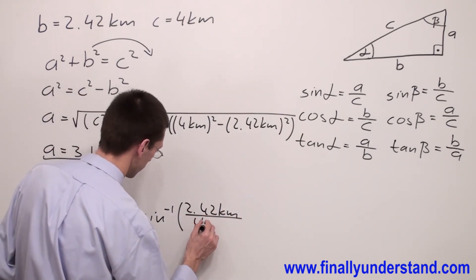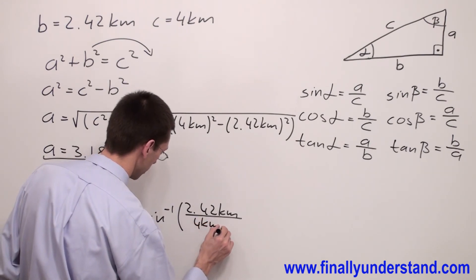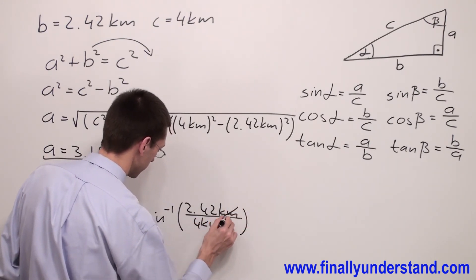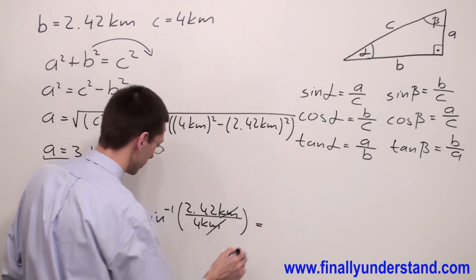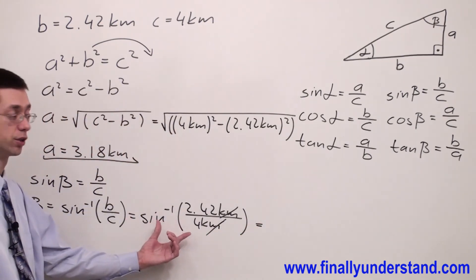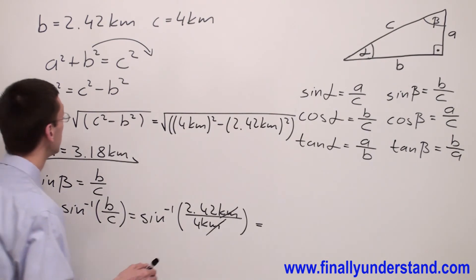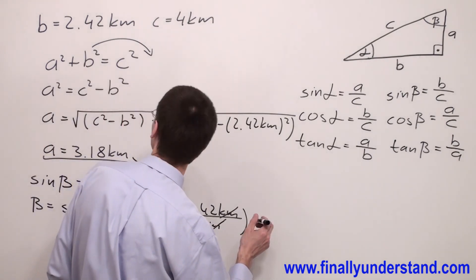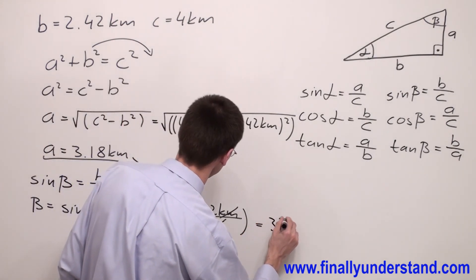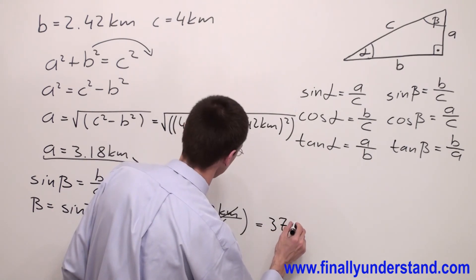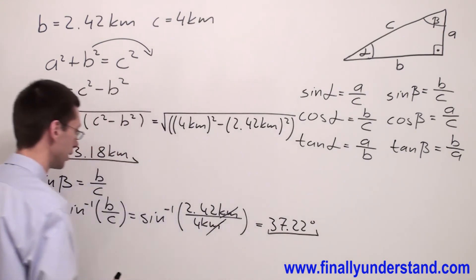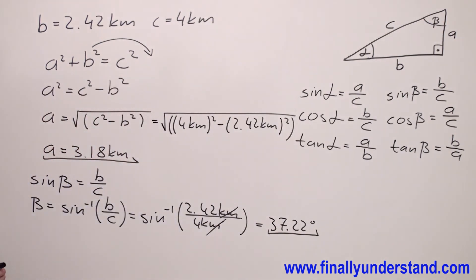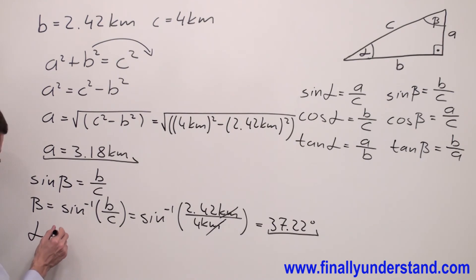Beta equals inverse sine of b over c, which is inverse sine of 2.42 kilometers over 4 kilometers. Kilometers cancel out. Plug this expression into the calculator and you're supposed to get the angle 37.22 degrees. This is angle beta.